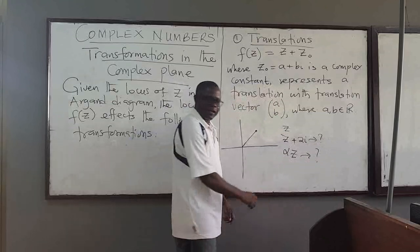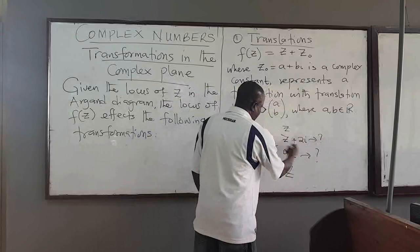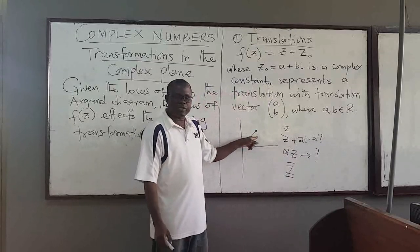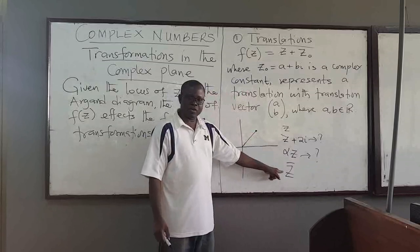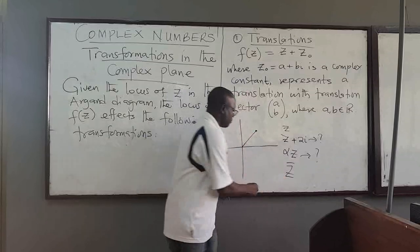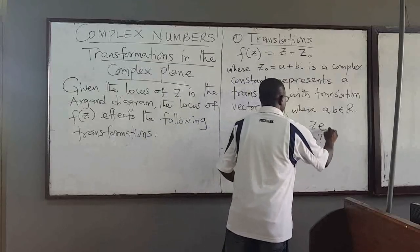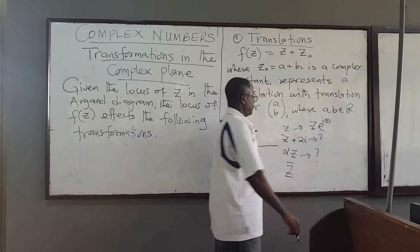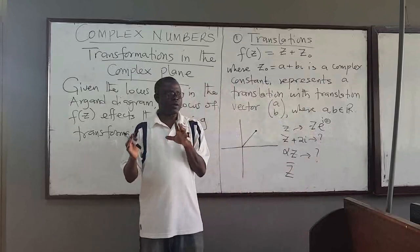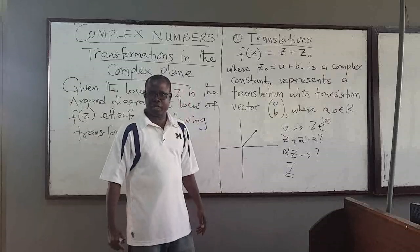If I take the complex conjugate of z, how does it change the point z? If you take the complex conjugate of x, or if you multiply z by e to the i-theta — what does this become, how is it transformed? Those are the various transformations we want to start looking at.